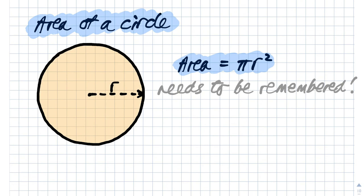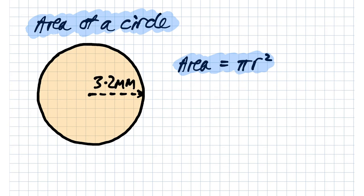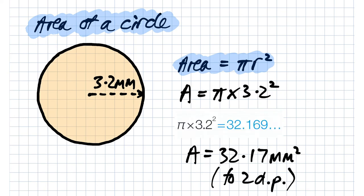When it comes to areas of circles, you've got to remember the formula—pi times r squared, where r is the radius of the circle. For this circle we have a radius of 3.2 millimeters. So our area ends up being pi times 3.2 squared. If we put this into our calculator we end up with 32.17 millimeters squared correct to two decimal places.